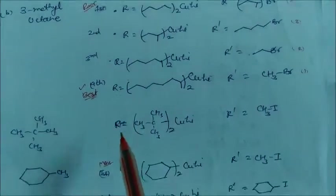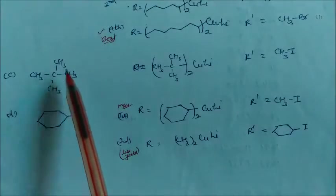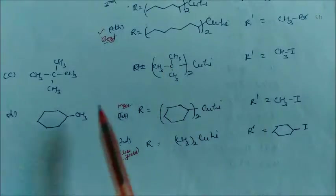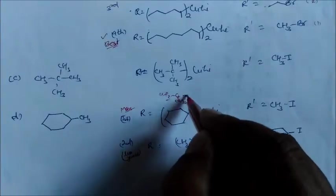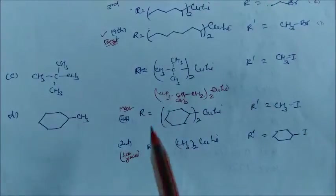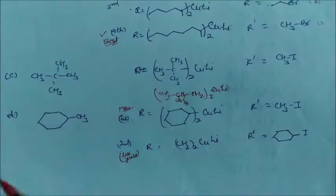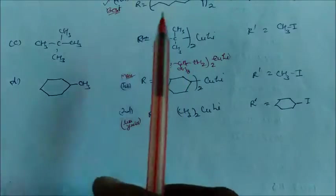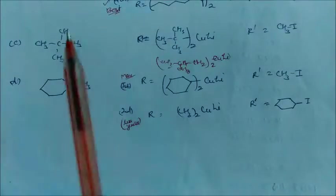This arrangement gives the best result. Similarly, to get maximum yield for the next target compound, take R' as CH₃ (methyl halide) and put the remaining carbon chain into the Gilman's reagent — this gives maximum yield. Alternatively, you can use an isobutyl cuprate lithium, which can also give a good product. However, the methyl halide option gives the best yield; the branched option gives less because that carbon is harder to break — it is a quaternary carbon, whereas the methyl is a primary carbon.